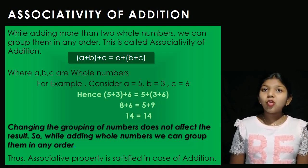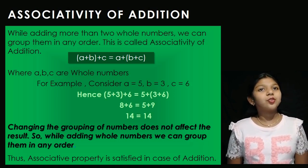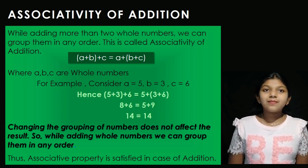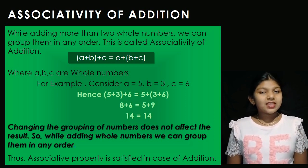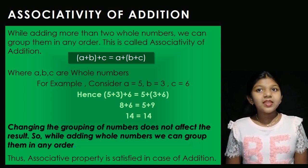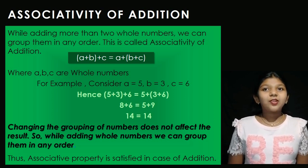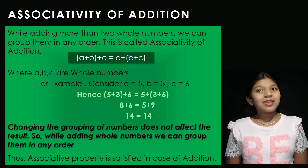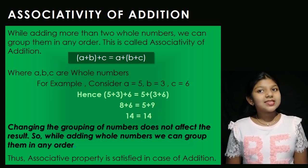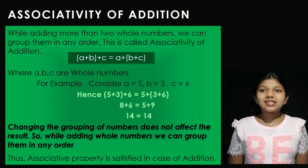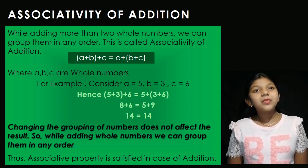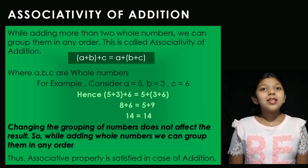While adding more than 2 whole numbers, we can group them in any order. A plus B plus C is equal to A plus B plus C. Either we can group A and B and add the result with C, or group B and C and add the result with A. Either way, the result is the same.